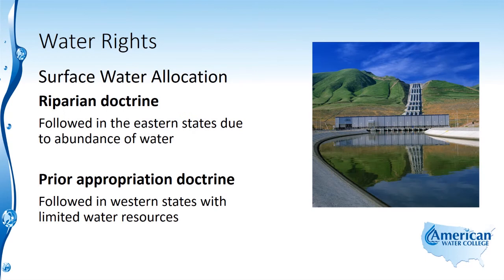Now let's take a look at some water rights surrounding this source water that we've been talking about. First we have the riparian doctrine, which is followed in the eastern states due to the abundance of water. Then there's the prior appropriation doctrine, which is followed in the western states with limited water resources. We're going to look at these different doctrines in more detail.